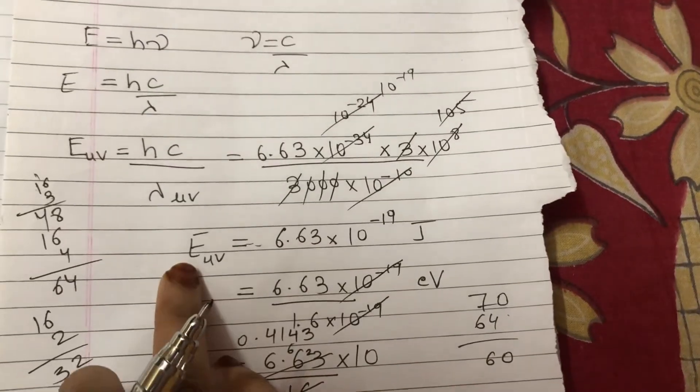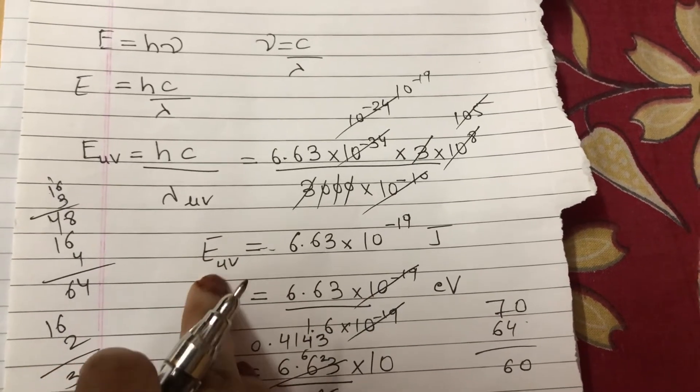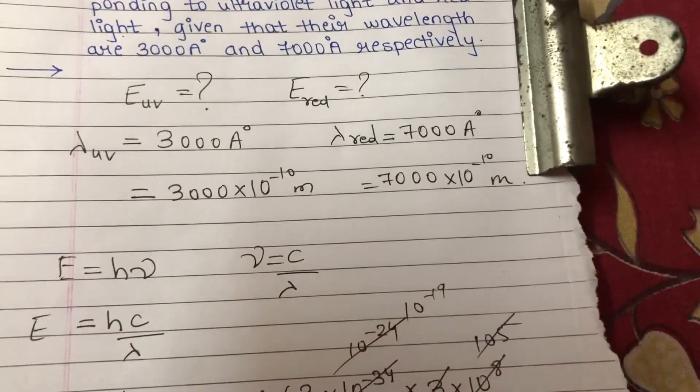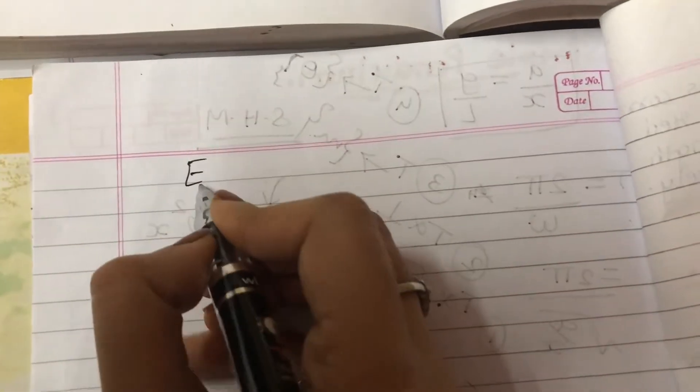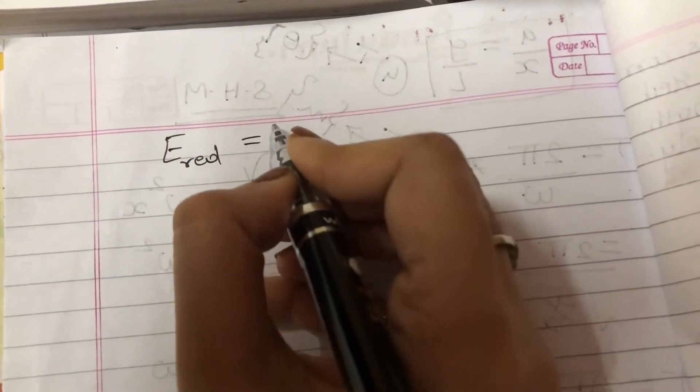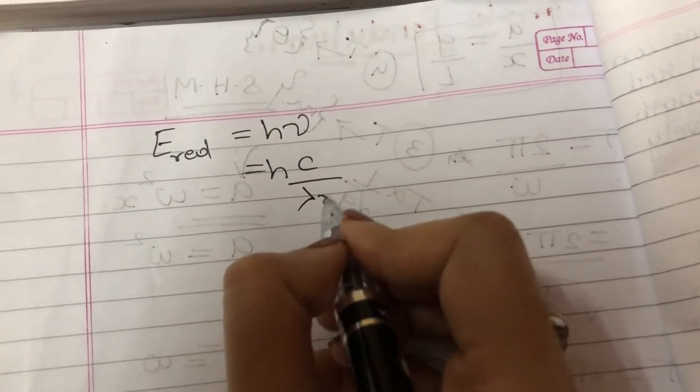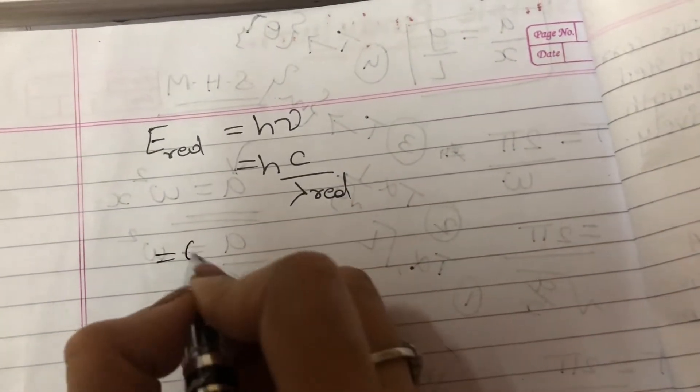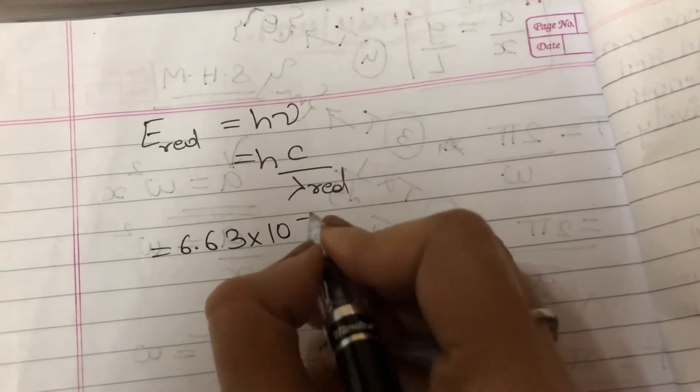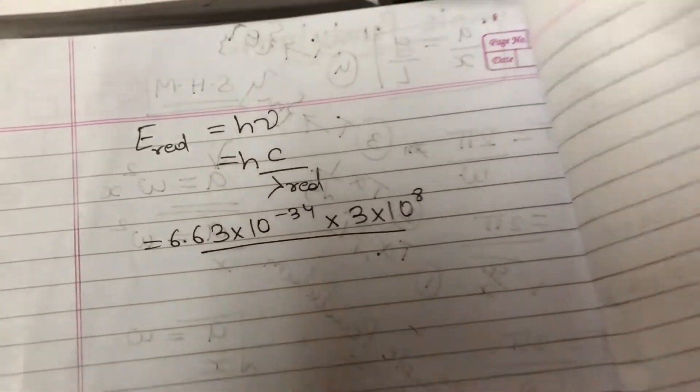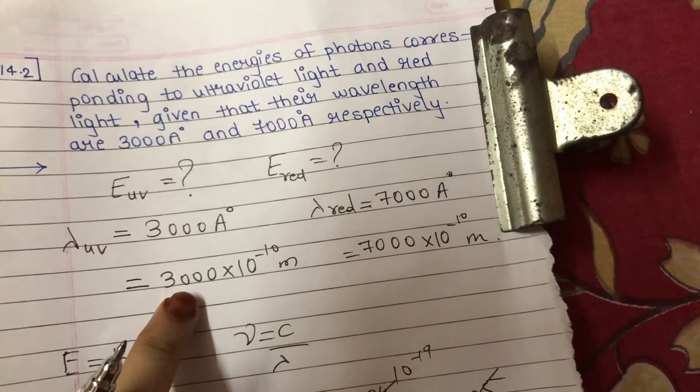This was the energy of photon corresponding to UV light. Now we will be calculating energy of photon corresponding to red light. That is E = hν = hc/λ. For red light, it is 6.63×10^-34 times 3×10^8, divided by 7000×10^-10.